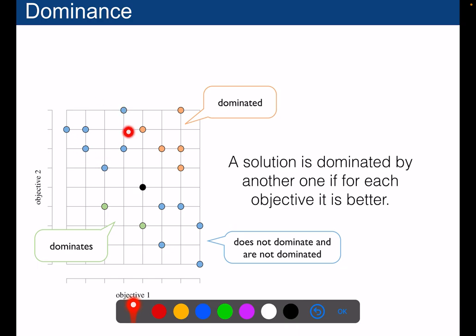What about the blue points? The blue points — you cannot really compare them. They do not dominate and they are not dominated by the black points. So we say that one solution is dominated by another one if for each objective it is better. That's an important notion that you have to keep in mind.